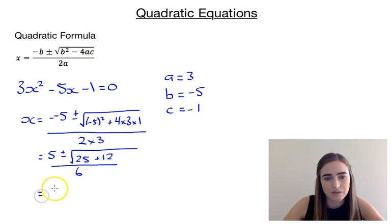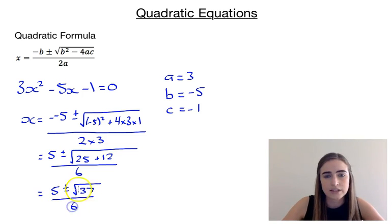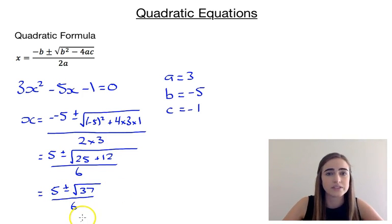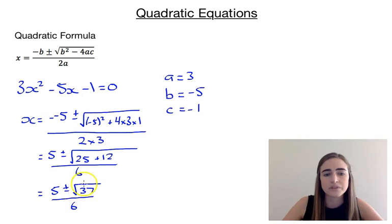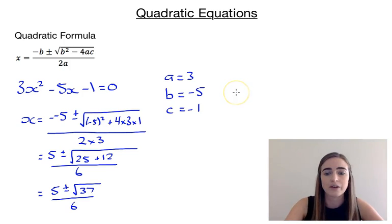If we simplify that a little bit further, it would be 5 plus or minus the square root of 37 over 6. So we've got our two answers: 5 plus the square root of 37 over 6, and 5 minus the square root of 37 over 6. It's always important to simplify further if you can. The square root of 37 we can't simplify, so that's where we'll leave that one.